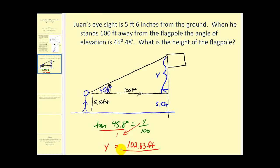Now be careful, that's not the height of the flag because we still have to add 5.5 feet from his line of sight to the ground. So the total height of the flagpole would be 108.33 feet.